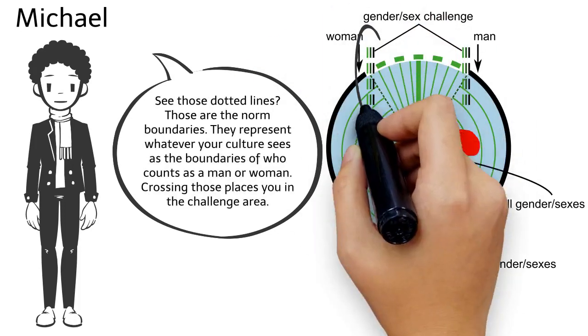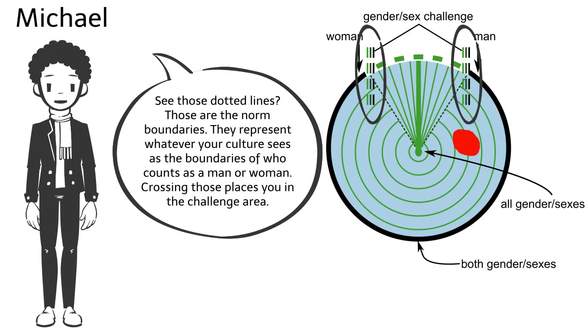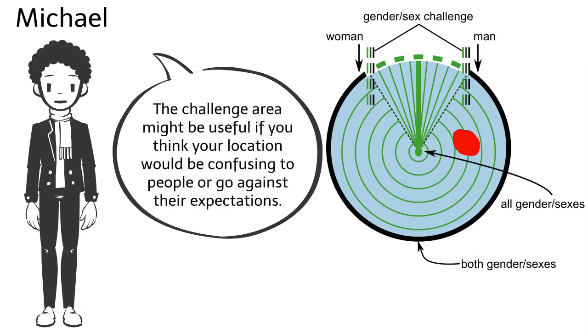See those dotted lines? Those are the norm boundaries. They represent whatever your culture sees as the boundaries of who counts as a man or woman. Crossing those places you in the challenge area. The challenge area might be useful if you think your location would be confusing to people or go against their expectations.